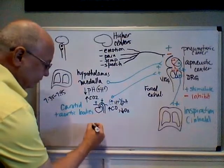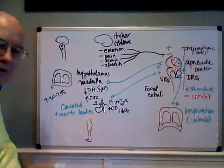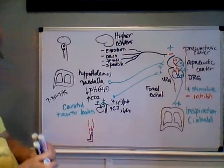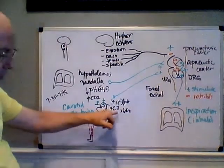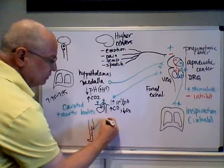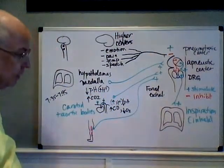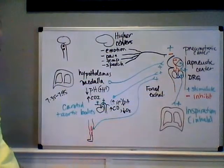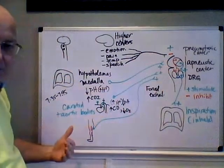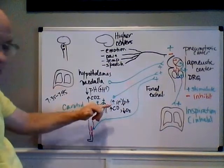Another backup involves skeletal muscles. When skeletal muscles increase activity, they generate more carbon dioxide and burn oxygen faster. Muscle spindle fibers detect increased muscle activity and stimulate the respiratory rhythmicity center. The ventral respiratory group then drives forced exhalation. So these are several mechanisms that alter our respiratory patterns to adjust our body's pH.